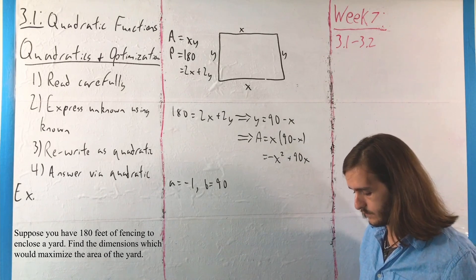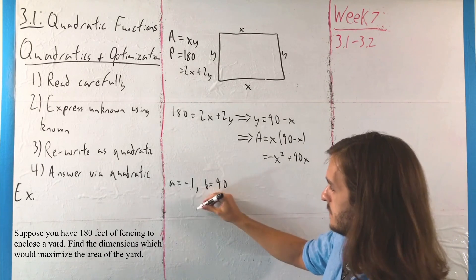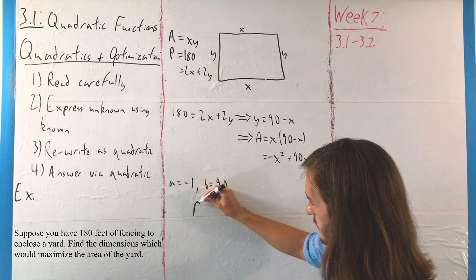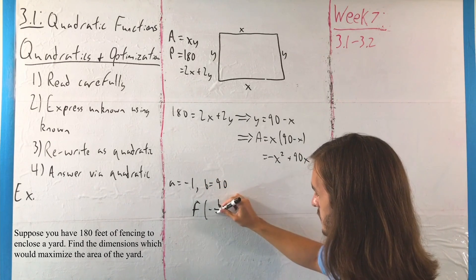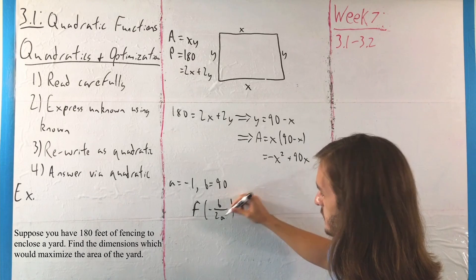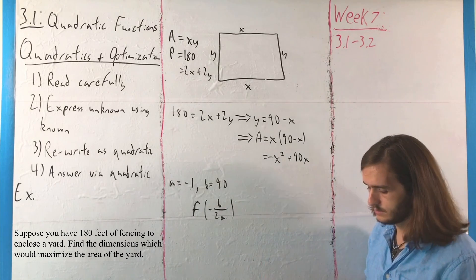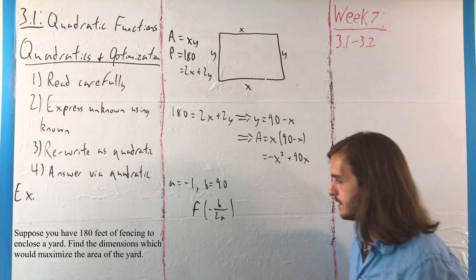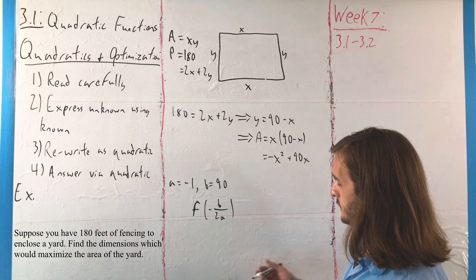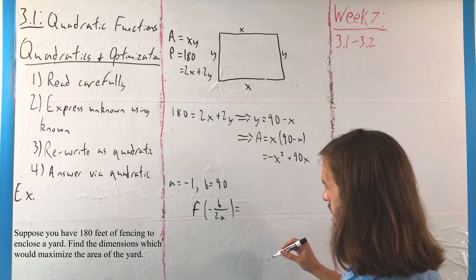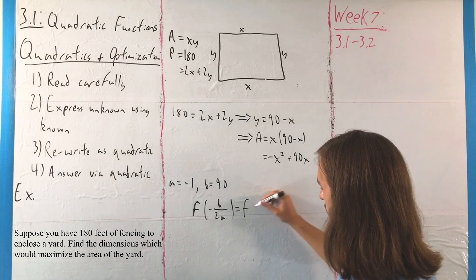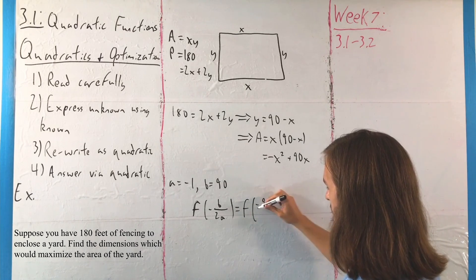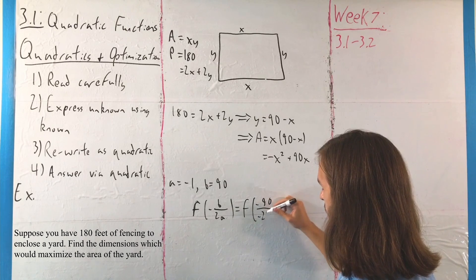And here we also have that b is equal to 90, so we can use our vertex formula there. In particular, what we are looking for is the value f of negative b over 2a, because we're trying to find the maximum value for this along with our dimensions.